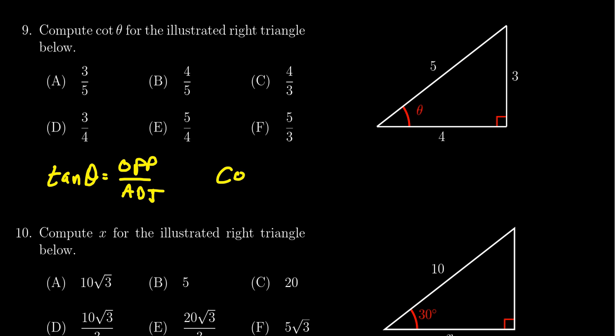And similarly, cotangent is the reciprocal of tangent, which means it's the tangent fraction upside down. So cotangent is going to equal adjacent over opposite. This is all with reference to the angle theta right here.